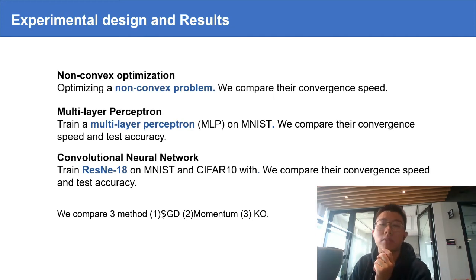Then, we study the effectiveness of the proposed Kalman Optimizer via three experiments. We do a non-convex optimization problem and train two neural networks on different datasets. We compare three methods: the Kalman Optimizer, vanilla stochastic gradient descent, and the momentum method.